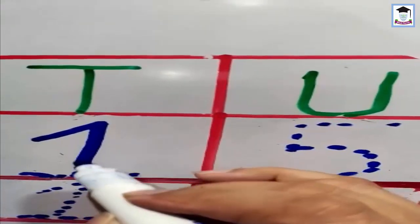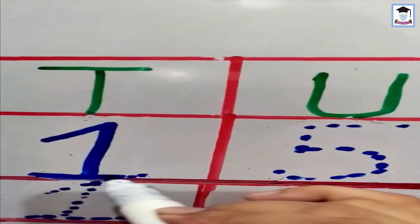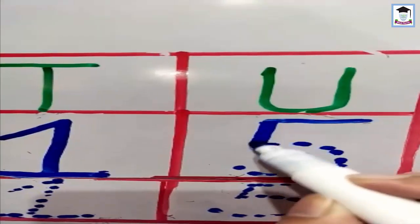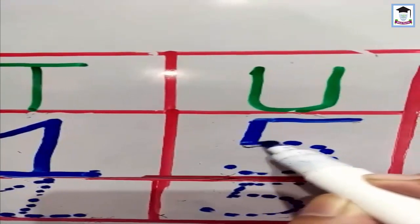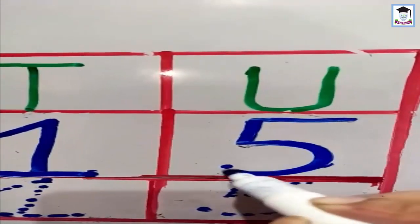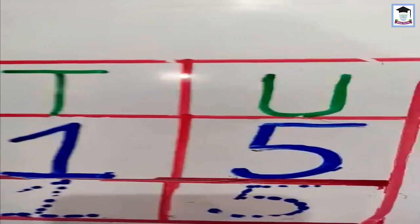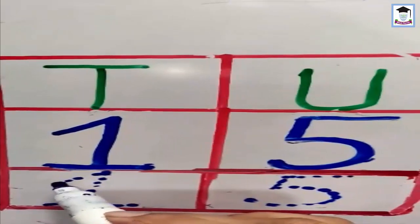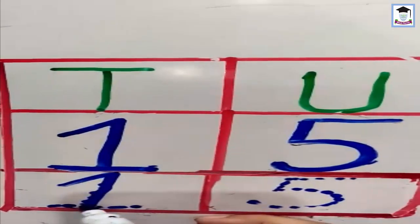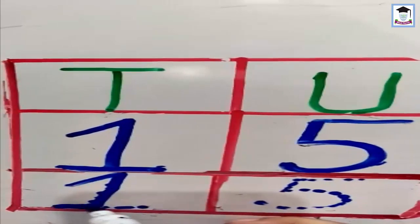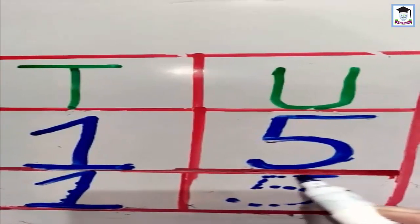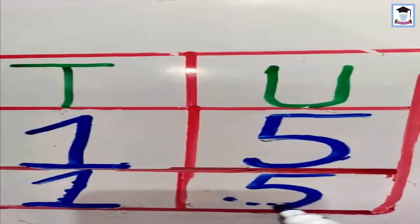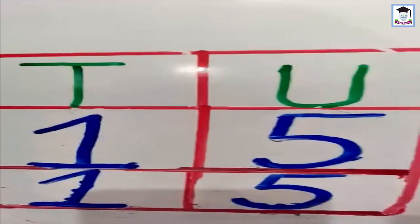Now we will practice the written form. We will learn to write 1 and 5 to make 15. Slant line, straight line, and make a curve — 15. Once again: sliding line, straight line, sleeping line, sleeping line, straight line, curve — make 15.